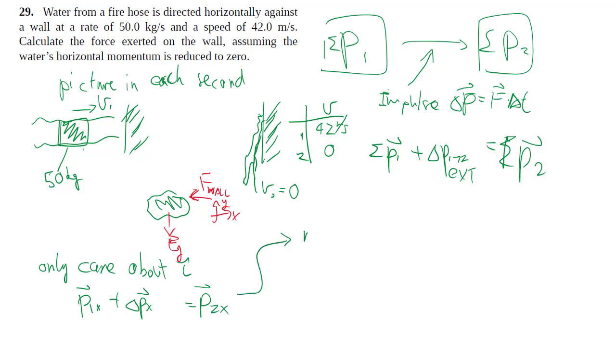So you have m of the water times v1 plus the only external force in the horizontal direction, F_wall, times some kind of delta t is equal to zero because afterwards it's not moving. Delta t in this case is your one second because we're still considering within every second what's happening.